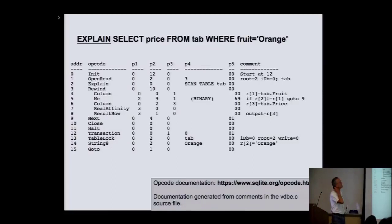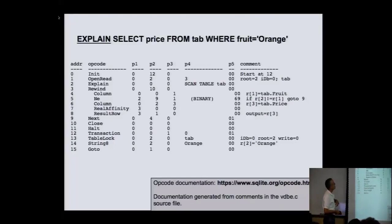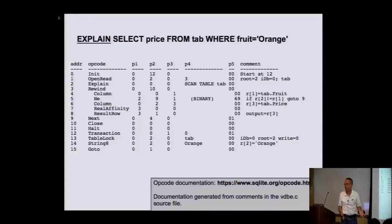Here's an example of what the bytecode looks like. You can look at the bytecode for any SQL statement SQLite generates by putting EXPLAIN up front. The documentation for the opcodes is available online. This example is doing a full table scan, so it's pretty simple and fits on one slide. For a join with subqueries and lots of conditions, it might go on for hundreds or even thousands of instructions.